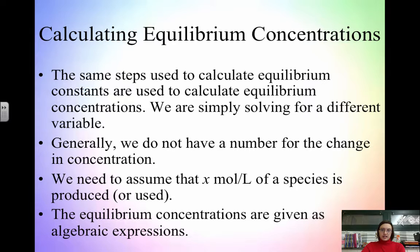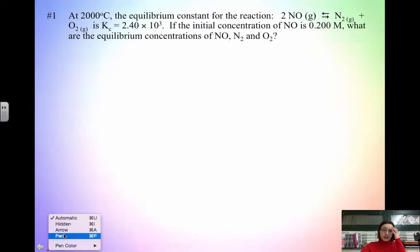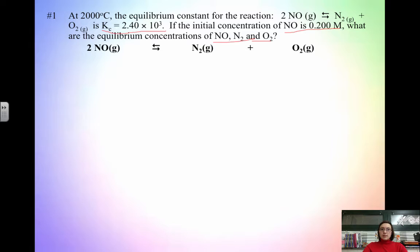In example one, at 2000 degrees Celsius, the equilibrium constant for the reaction 2NO yields N₂ plus O₂ is Kc equals 2.4 times 10 to the negative third. The initial concentration of NO is 0.2 M. We need to find the equilibrium concentrations of all three species. We start with an ICE table. Initially, we have 0.2 M of NO, and no N₂ or O₂ since those are products not yet formed.